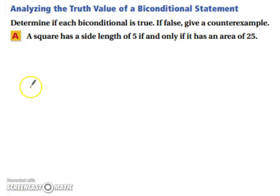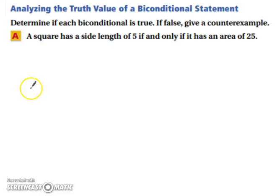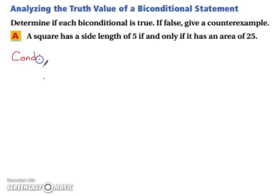Let's analyze the truth value of a bi-conditional statement to determine if each bi-conditional is true. If it's false, give a counterexample. For a bi-conditional statement to be true, both the conditional statement and its converse must be true. So it's helpful to write out both the conditional and the converse.